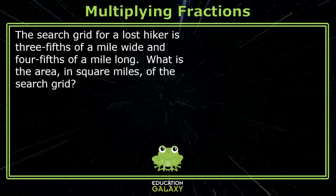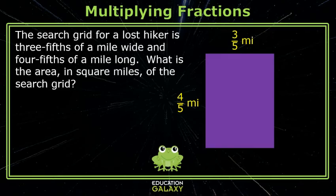Okay, Henrietta. The search grid for a lost hiker is three-fifths of a mile wide and four-fifths of a mile long. What is the area in square miles of the search grid? Well, just like you said,